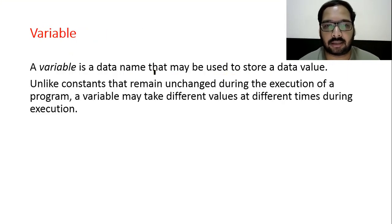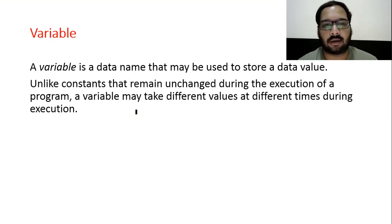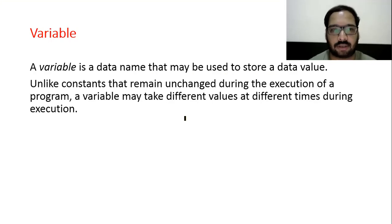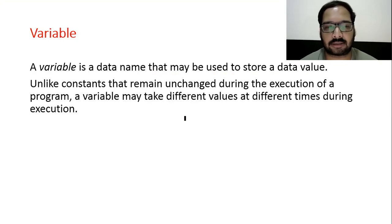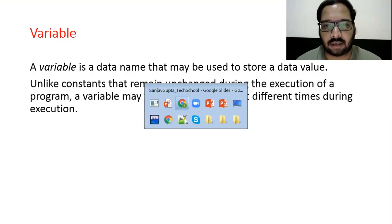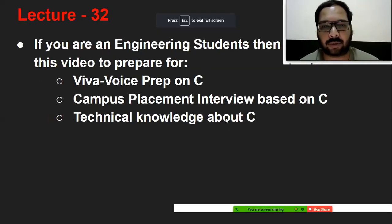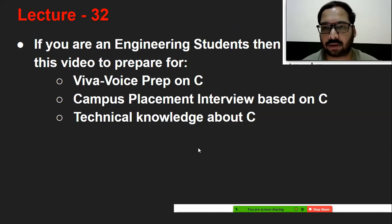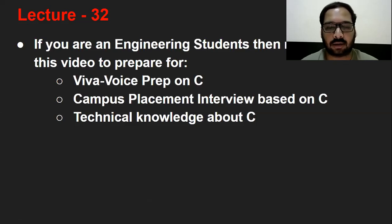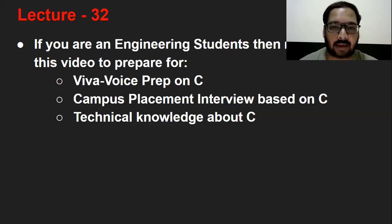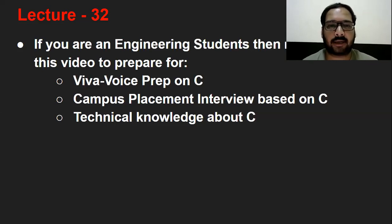Variable: a variable is a data name that may be used to store a data value. Unlike constants that remain unchanged during execution of a program, a variable may take different values at different times during execution. So that's all — these are some important points discussed in this video related to your preparation for viva or campus placement interviews. These are basic things, but you need to know all these while giving any viva or sitting in an interview. This video is helpful if you are a beginner preparing for viva or placements.